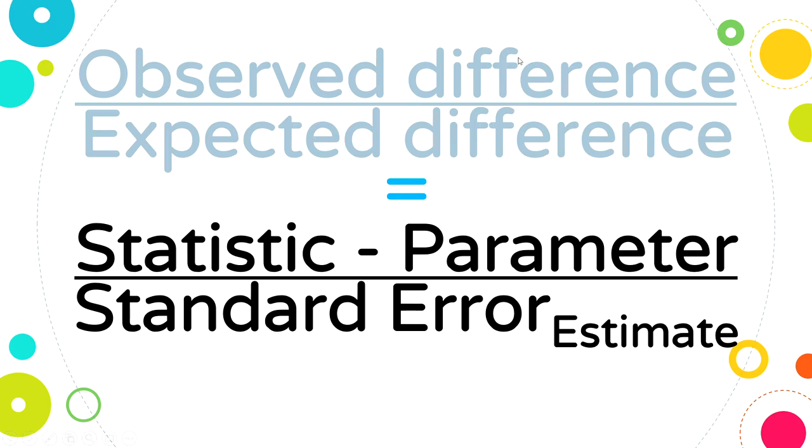And the way that we calculate this for a lot of our tests is simply going to be getting a statistic and subtracting the expected value, the parameter. That gives you the difference and dividing it by the standard error of your estimate, the statistic, which we already looked at how to do for a Z test.